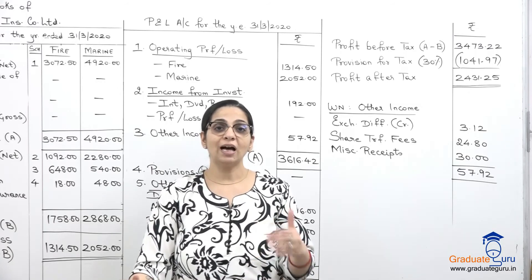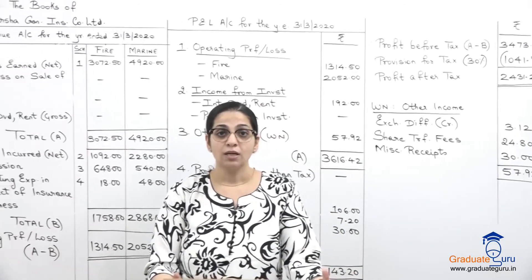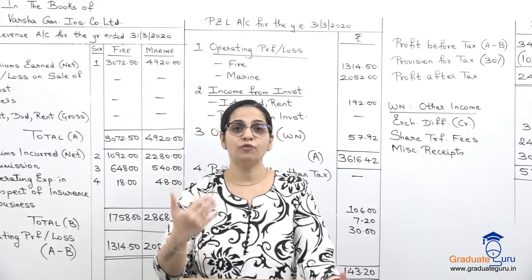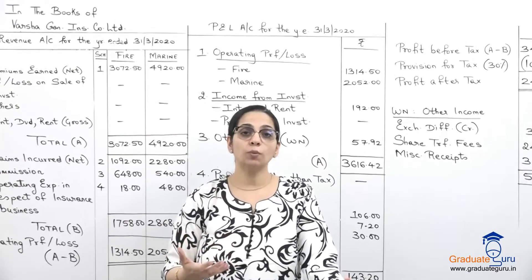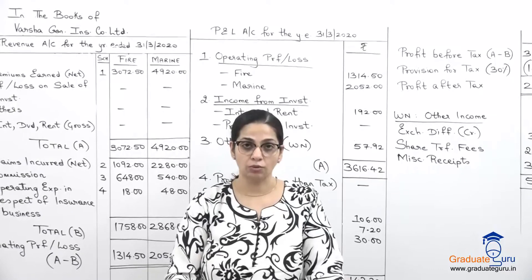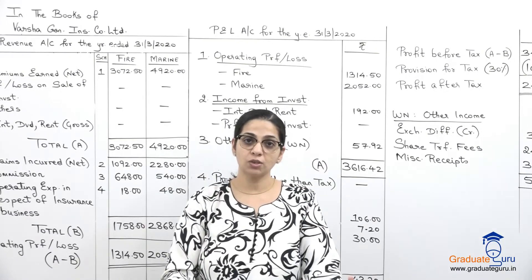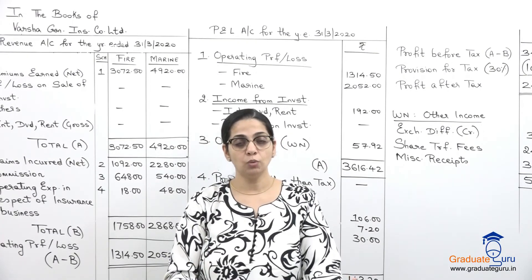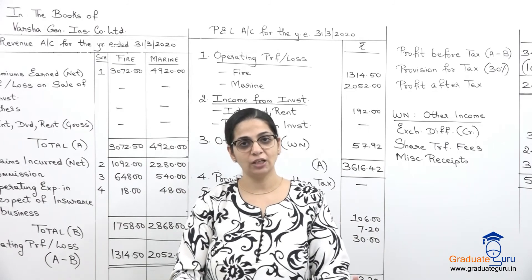So this is how you find the final profit by preparing profit and loss account. Till the last sum we were doing only revenue accounts. Now we have gone one step further and we have also prepared our profit and loss account. I hope you have understood this well. Take all of this down. We wind up this session over here. Thank you.